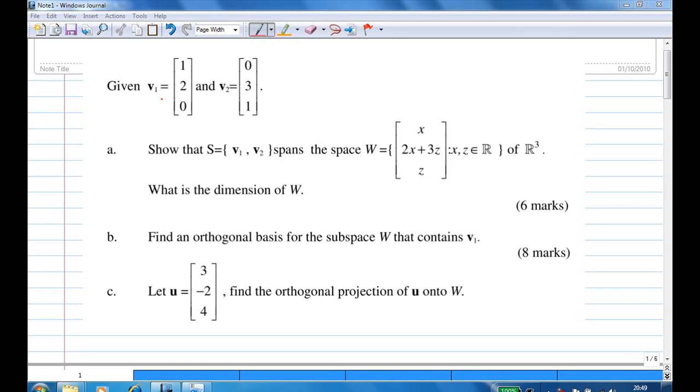We are given V1, which is 1, 2, 0, and V2, which is 0, 3, 1. Show that the set S consists of V1 and V2 spans the space W.